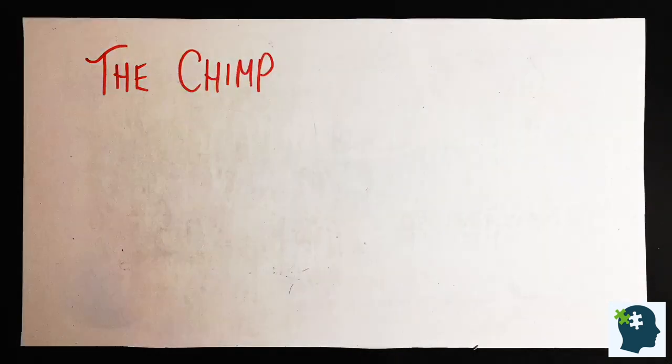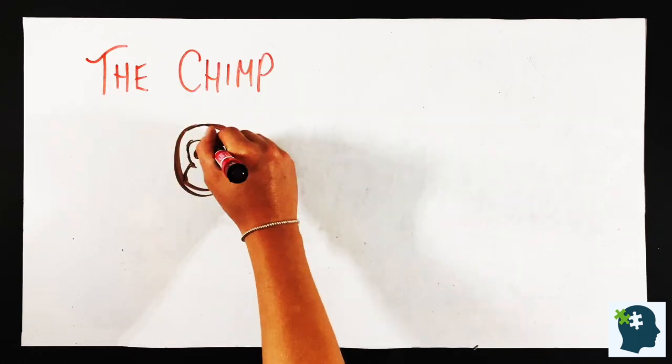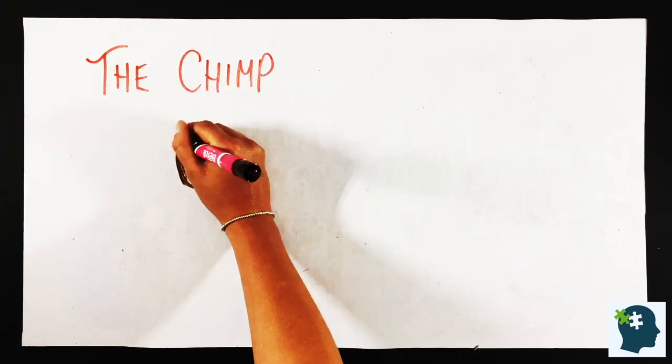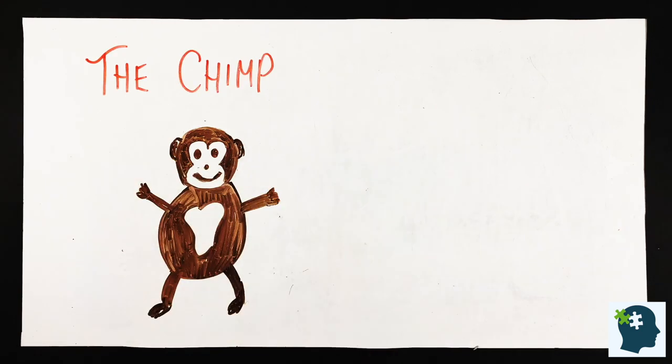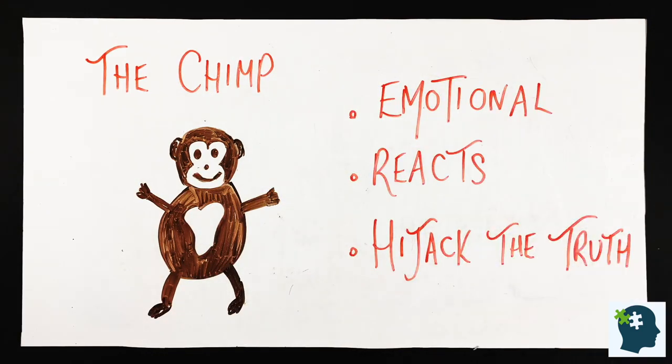So first up, the chimp, whose fancy name is the limbic system. Think of the chimp as the emotional part of our brain. As Dr. Steve puts it, it's the fast-reacting systems within the mind that uses our feelings to jump to conclusions, often hijacking the facts and truth of a situation.